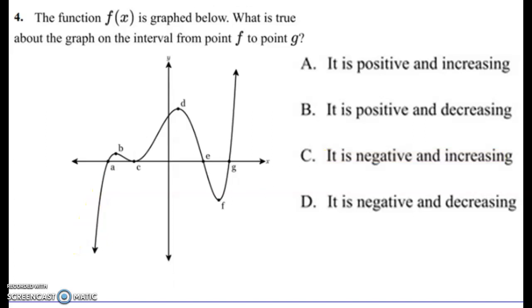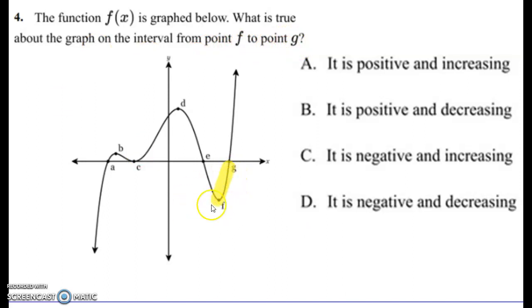Another example: what is true about the graph on the interval from point F to point G? Finding F to G — that interval is also in the negative area. I promise they won't all be negative when you work these out. This one is negative and it's going up, so it's negative and increasing.